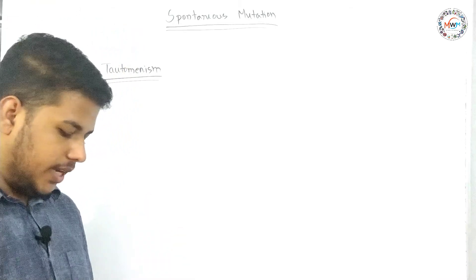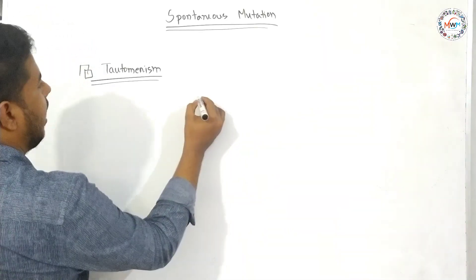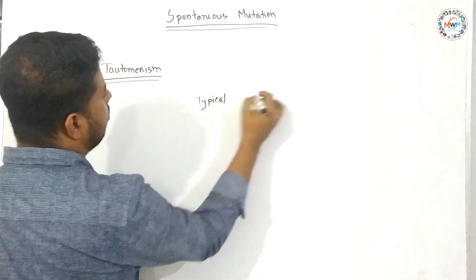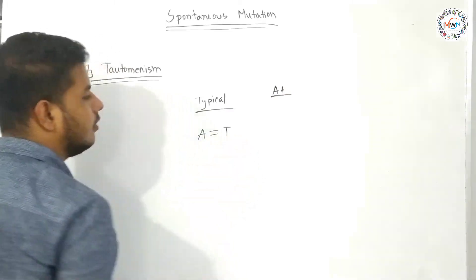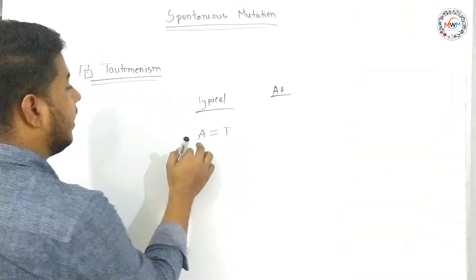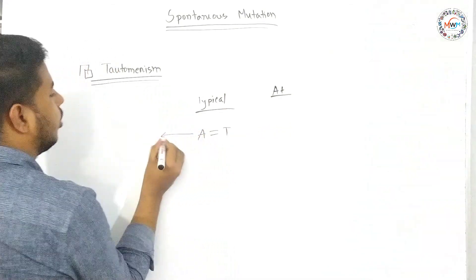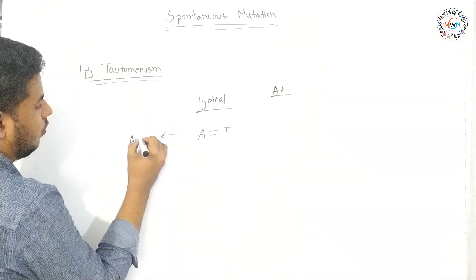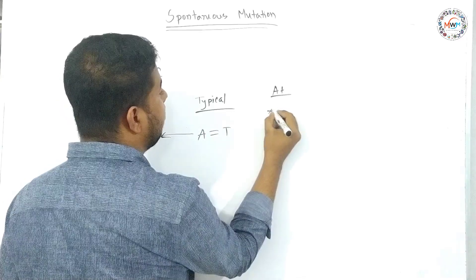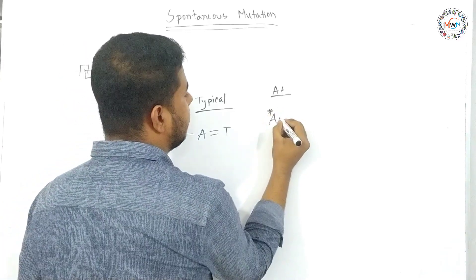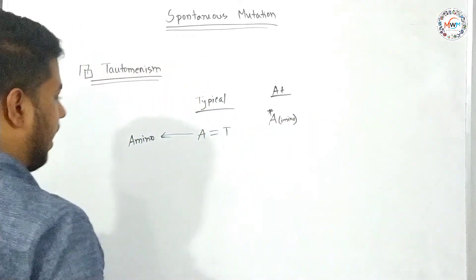We can see the typical binding and atypical binding. We can see that adenine pairs with thymine as well. But when adenine is in the rare form, which means the imino form, that leads to mispairing — this is what we observe.